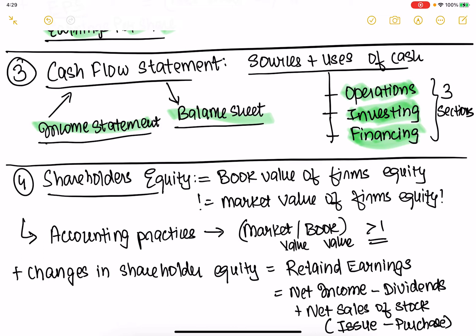The cash flow statement tells you how your company is using the cash it has and what are the sources of that cash. Shareholders' equity is the book value of the firm's equity — it's not equal to market value. That's the key distinction.